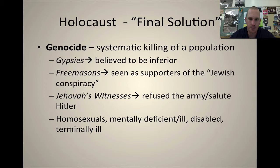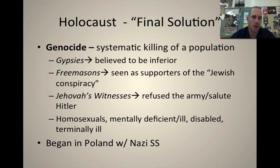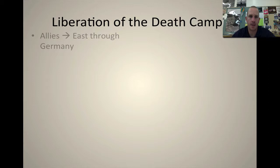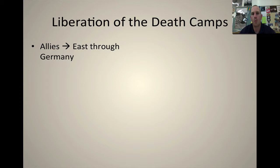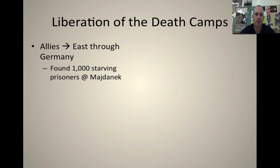This began in Poland with the Nazi SS and lasts throughout the war. It starts with mass graves, but the problem with mass graves is that it leaves evidence and is also tough psychologically on the people doing the shooting. It evolves into the gas chambers and then into the crematoriums. And actually, this is not even Hitler's idea — it is Himmler's idea. So the liberation of the death camps: we are moving east through Germany. A lot of people ask why we didn't do more earlier. The problem is we saw all the propaganda from World War I and thought what we were hearing about putting people in camps was again that same style of propaganda — throwing babies up and catching them on the ends of bayonets. So as we're moving east through Germany, we find 1,000 starving prisoners at Magdalenek.